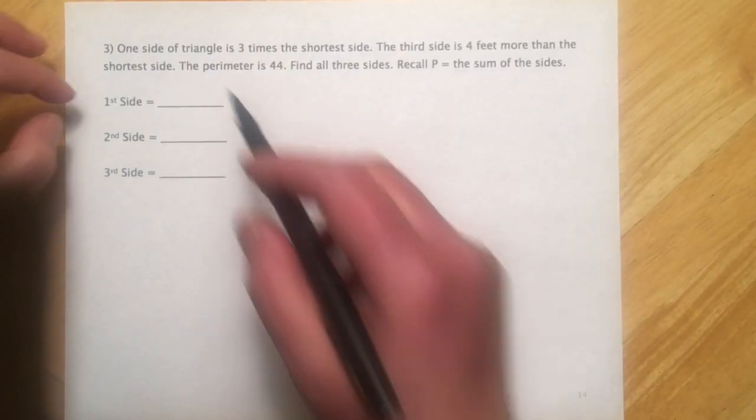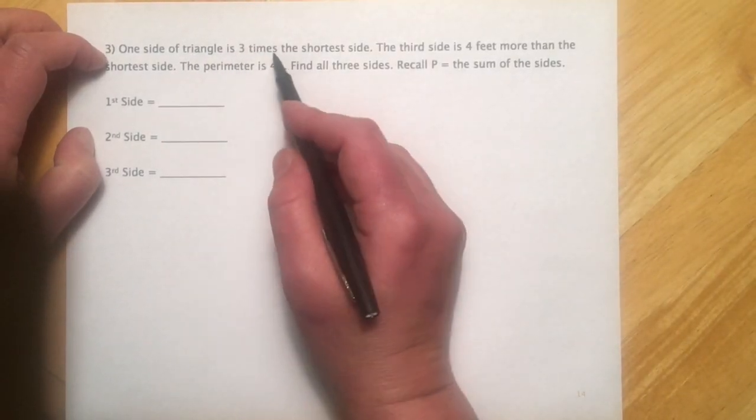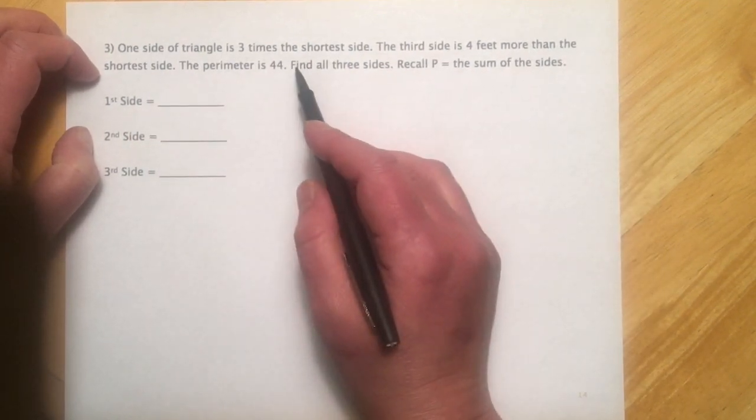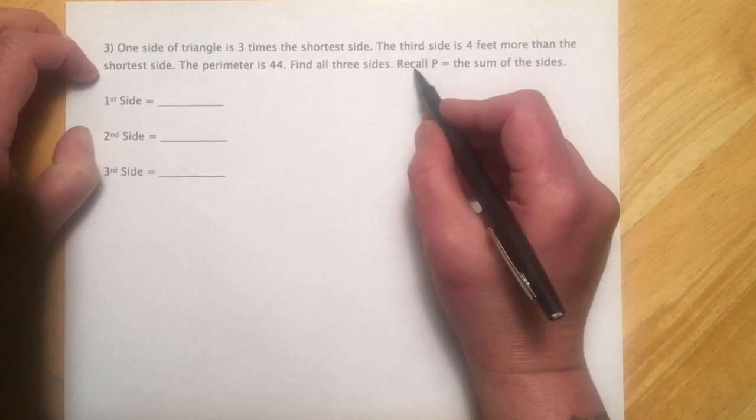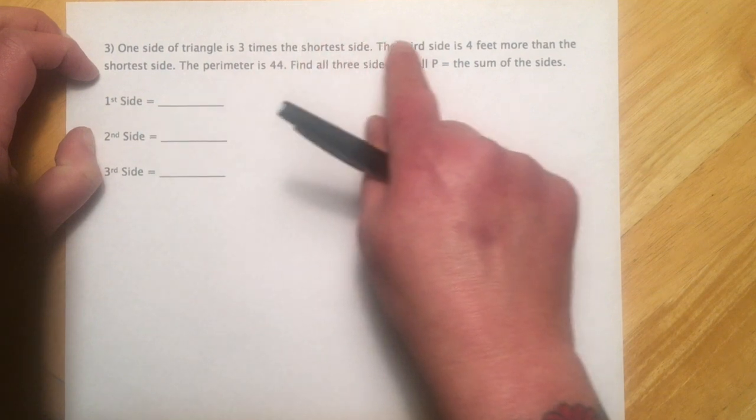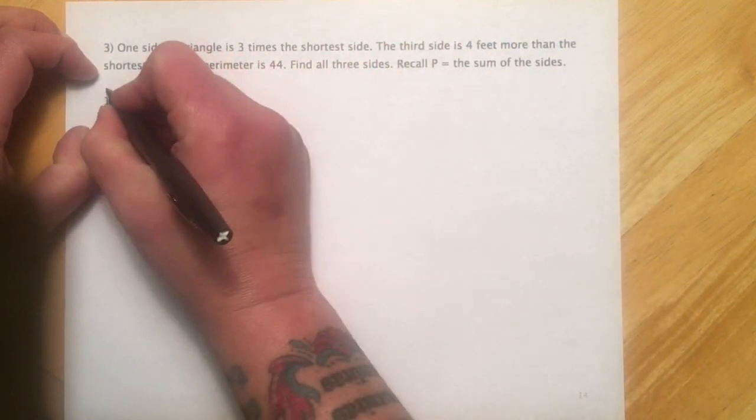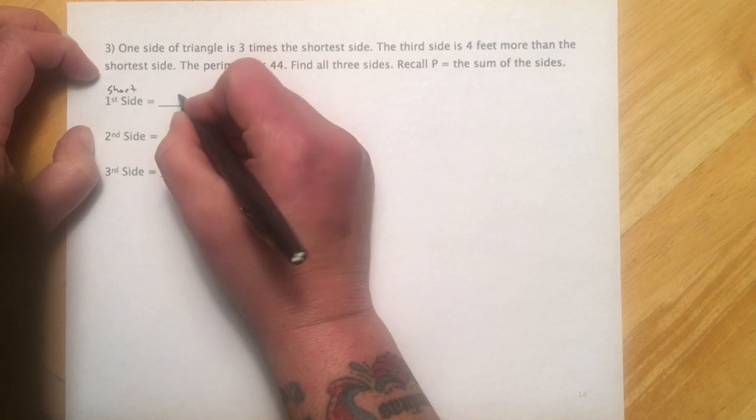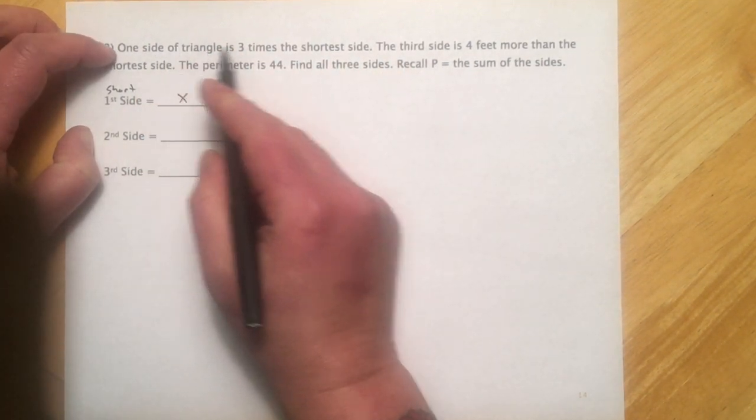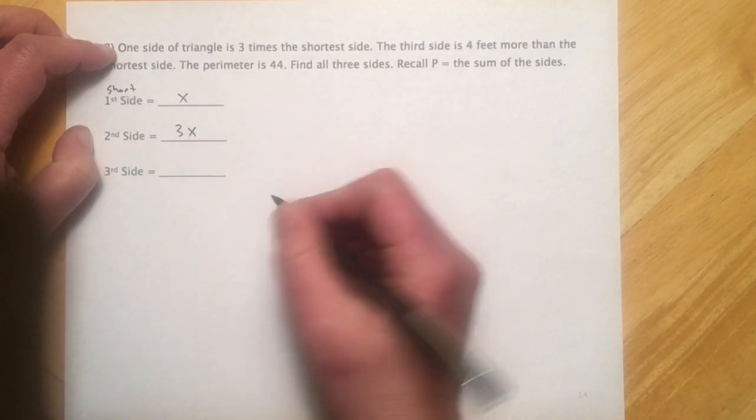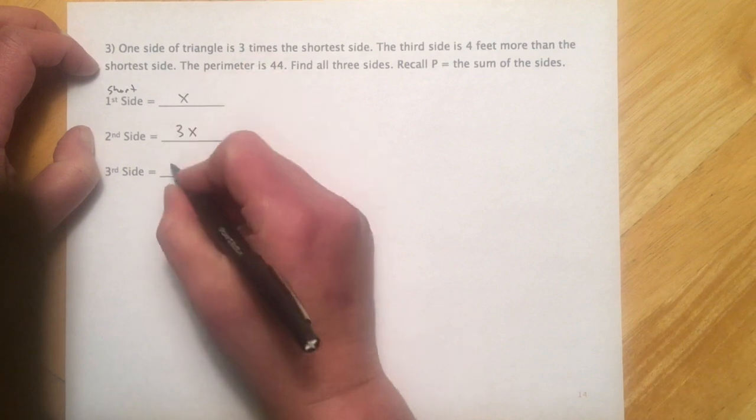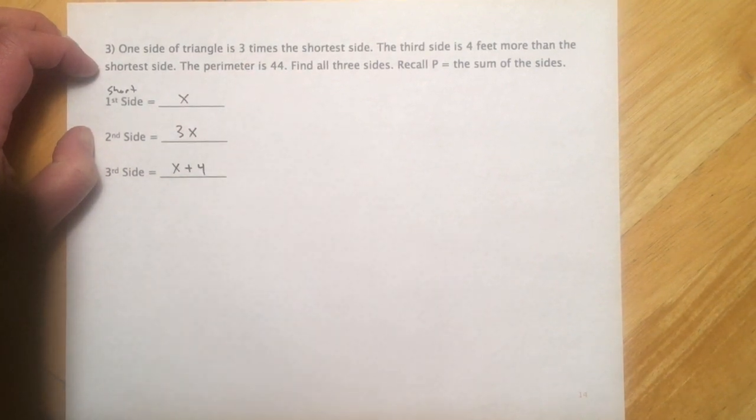So this next one's a triangle. One side of a triangle is three times the shortest. The third side is four more than the shortest. Perimeter is 44, find all three sides. Recall perimeter, you just add up the sides. So I'm going to make this first side the short one. I'm just going to let that be x, and then we'll write these other two in terms of it. So one side is three times the shortest, make that 3x. Third side is four feet more than the shortest, so it's x plus four feet more.